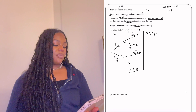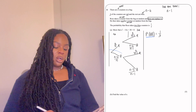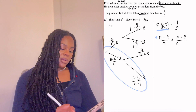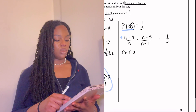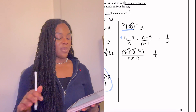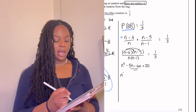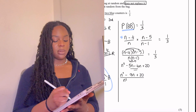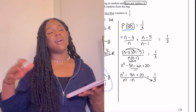The probability of Ross taking two blue counters: we look at the blue-blue branch of the tree. That's n minus 4 over n, multiplied by n minus 5 over n minus 1. We're told this equals one third. Multiplying the fractions — treating it like algebraic fractions — gives us (n minus 4)(n minus 5) over n(n minus 1). Expanding the top: n² minus 5n minus 4n plus 20 = n² minus 9n plus 20. The bottom expands to n² minus n. So the equation is (n² minus 9n plus 20) over (n² minus n) equals one third.